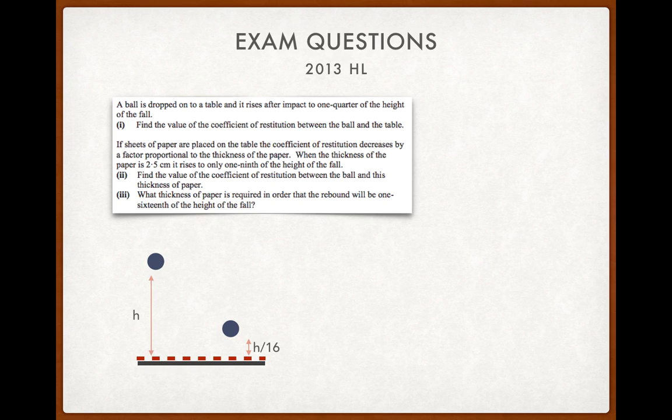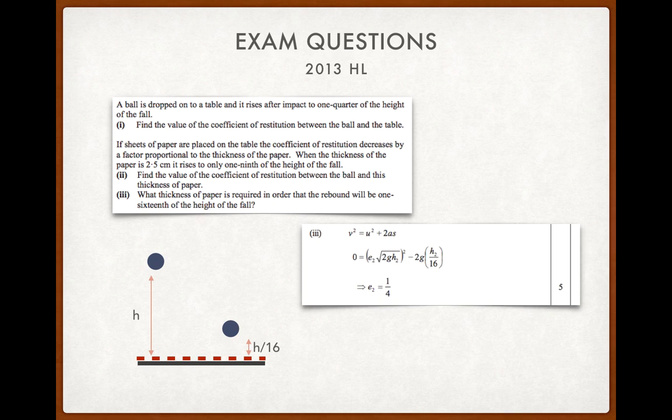So, in this case, the ball falls through a height h, rebounds up to h over 16. Let's get the coefficient of restitution, same as in parts 1 and parts 2. So, now we have the second coefficient of restitution when the height is h over 16, it's a quarter.